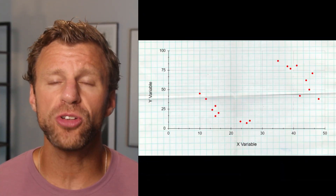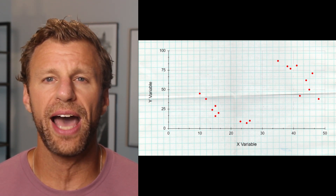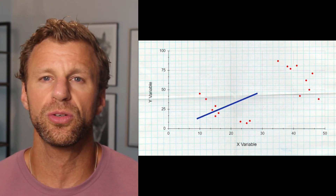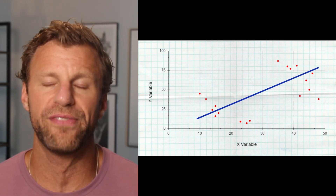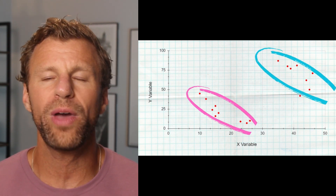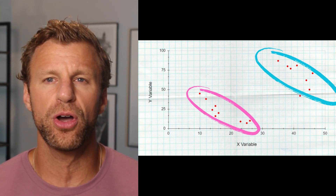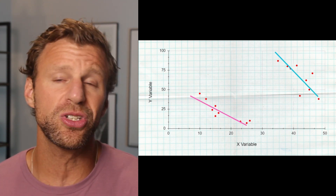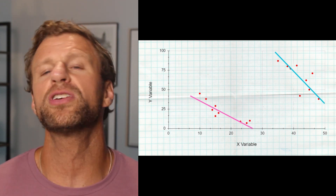Simpson's Paradox can actually also be seen in scatter plots with quantitative data. Here we see a scatter plot and overall we do see a positive trend as we move from left to right — as X goes up, there is a tendency for the Y values to also go up. But if we look at the subgroups — the one in the bottom left and the one in the top right — we actually see two negative trends. In each of those subgroups, as X goes up, Y goes down. But when we put all those values together on one scatter plot, it looks like there's a positive trend. Again, another example of Simpson's Paradox where we see a trend among subgroups disappear or reverse when we look at all of the data put together.